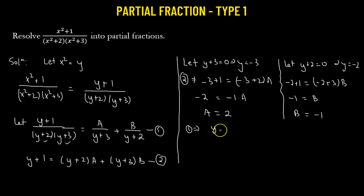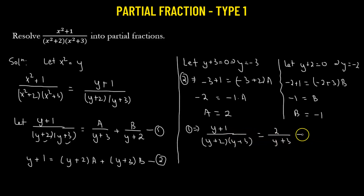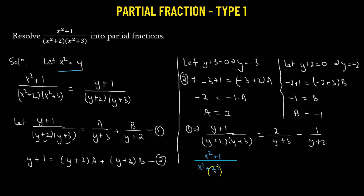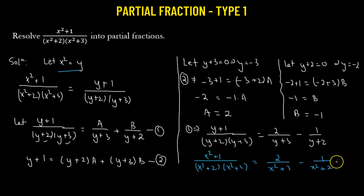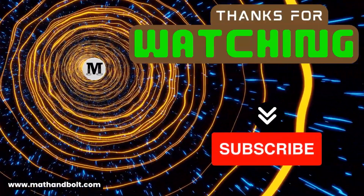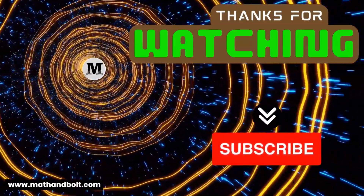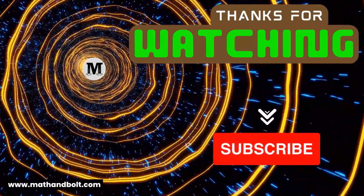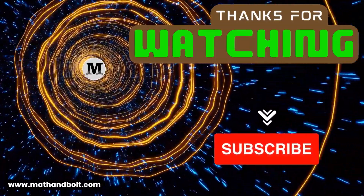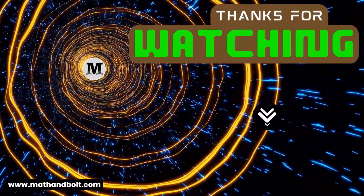Now that we have A = 2 and B = -1, equation 1 becomes (y + 1) / ((y + 2)(y + 3)) = 2 / (y + 3) - 1 / (y + 2). Finally, substituting y = x², we get (x² + 1) / ((x² + 2)(x² + 3)) = 2 / (x² + 3) - 1 / (x² + 2). This is the final result.